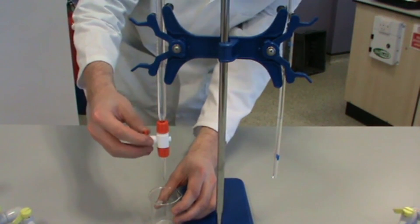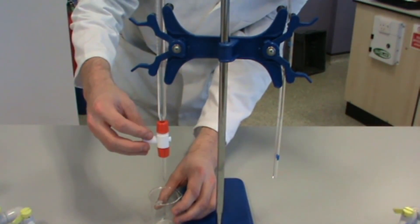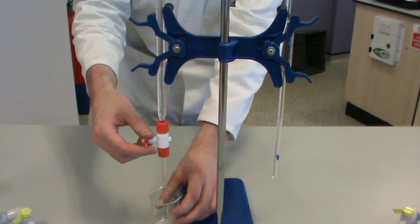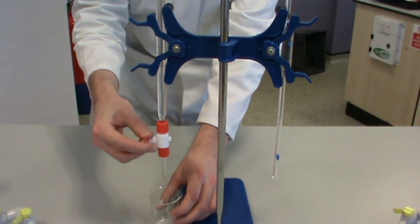Open the tap on your burette and allow a small amount of acid to fill the burette below the tap. This will help you gain an accurate measure of the volume of acid used.